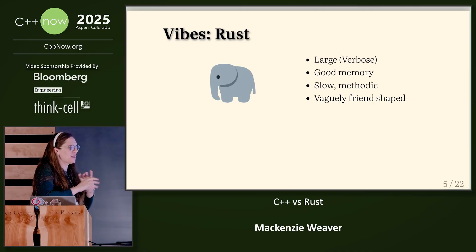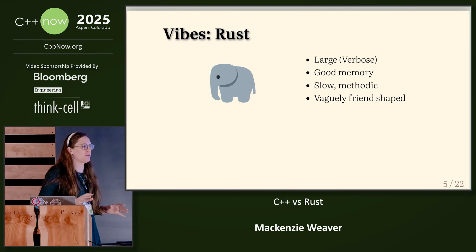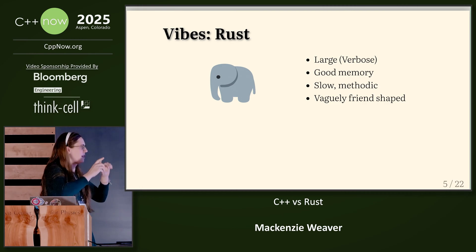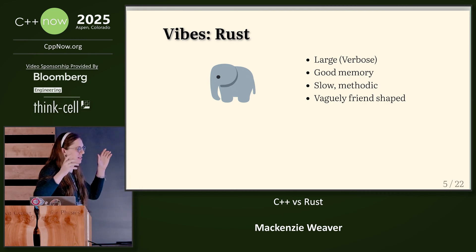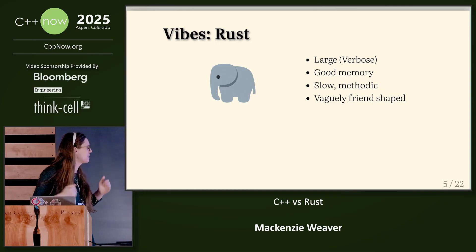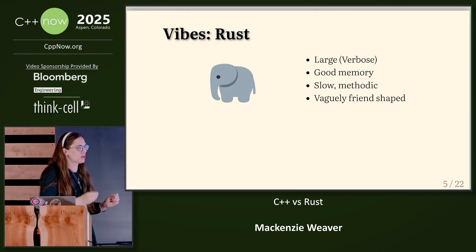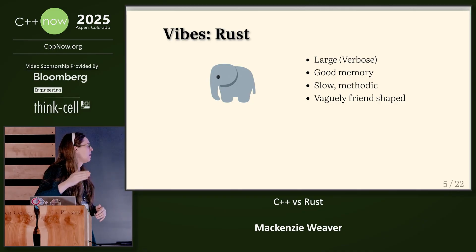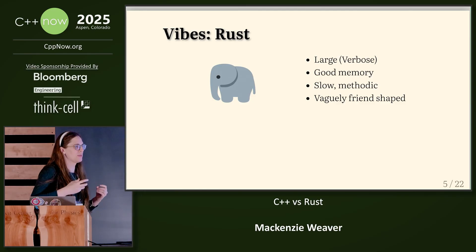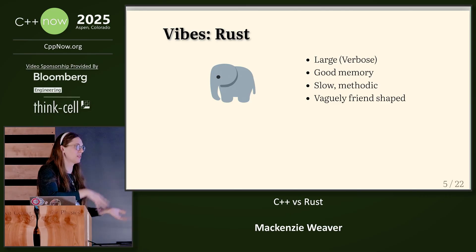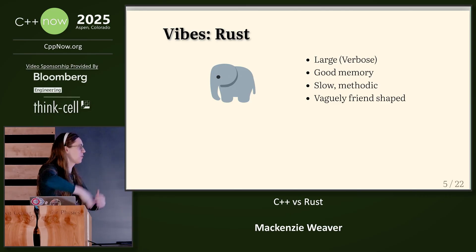So vibes. Rust feels super verbose when you write it. If you say the same thing in Rust as you would in C++, it takes like three or so lines depending on what you're saying. It also has really good memory — when I say that I'm talking about the lifetimes, it knows where each of your things came from. It's also very slow and methodic. You have to think about what you're doing. Sometimes you can't figure out what to do, so instead of just hacking together a solution like you would in C++, you actually have to go back and do a principled redesign of your entire algorithm. It's also vaguely French-shaped.